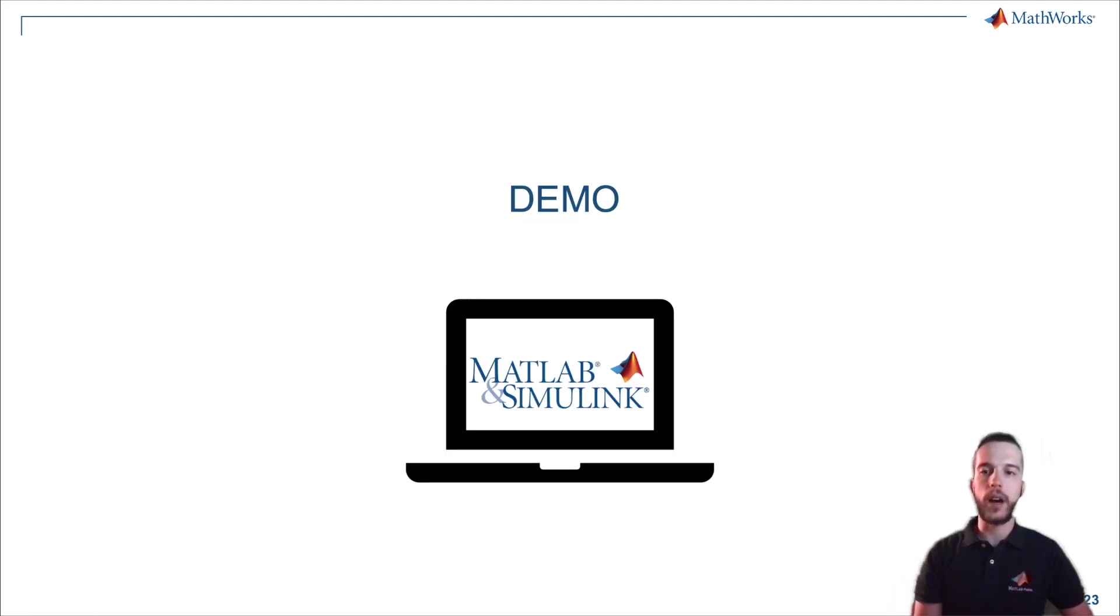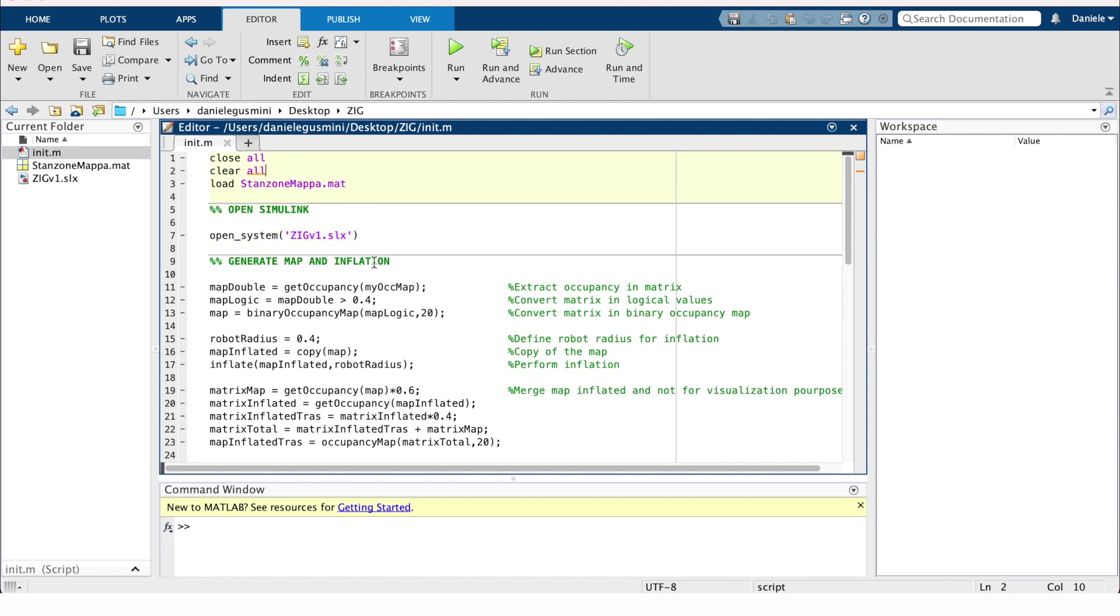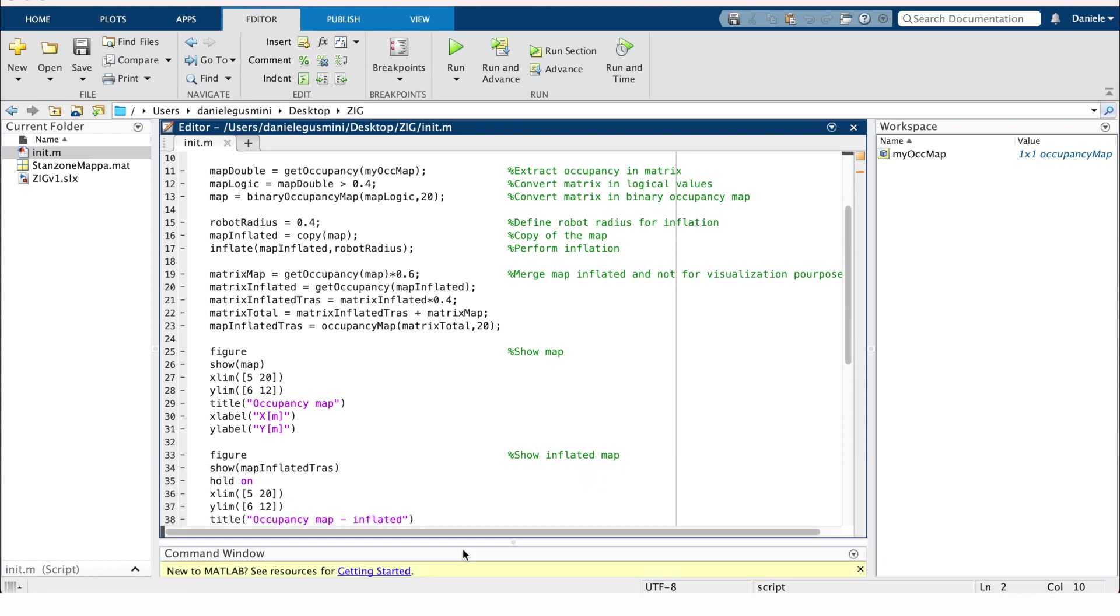Now let's see the actual demo. Here I have a script that goes through all the steps to perform a global planning. It's an operation that in this case is performed offline because the robot in this operation is still. We start clearing all of the variables and loading the stansone map dot mat, the occupancy map of our area.